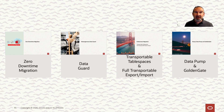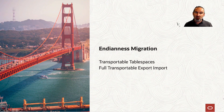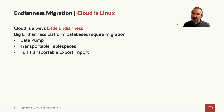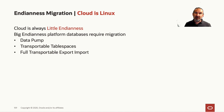As soon as our database gets bigger and is potentially also on a big Endian platform, transportable tablespaces and full transportable export import come into play. If the database is not too big, we would start with Datapump. But as soon as the database reaches a certain size — ballpark figures of several terabytes — Datapump gets too slow, and the extra work necessary for transportable tablespaces pays back. So we use transportable tablespaces or the improved version, full transportable export import.